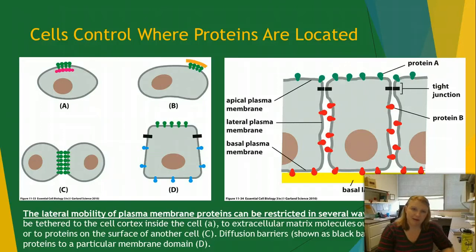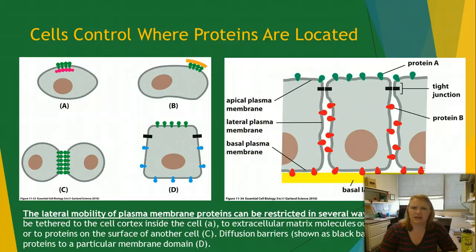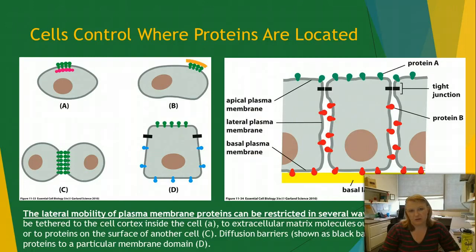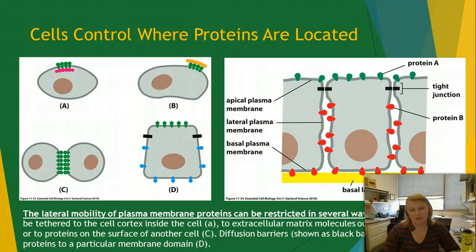Because everything is so fluid, the proteins in the membrane can move around just as much as the lipids can. It's really important for the cell to tie these proteins down and keep them in specific places. For example, gut cells clearly need different receptors on the side facing the gut versus the inside. The cell does this in several ways: proteins can be tethered by a cell cortex on the inside, tethered by something on the outside, tethered to another cell, or restricted by diffusion barriers such as tight junctions that stop proteins from crossing a specific area.